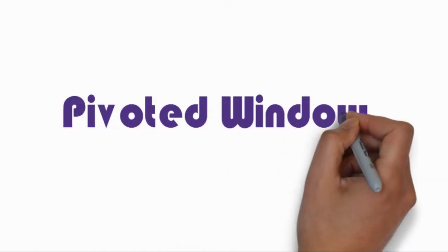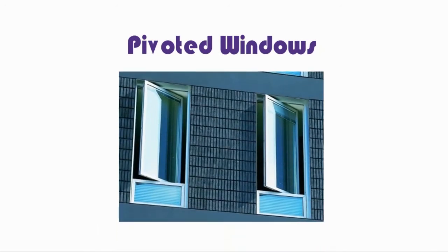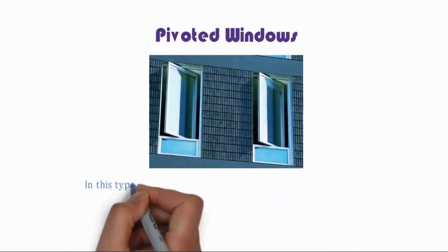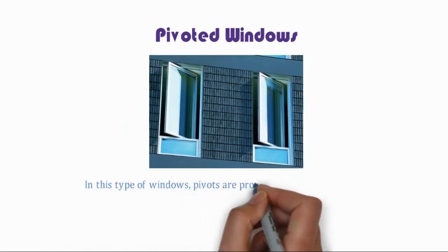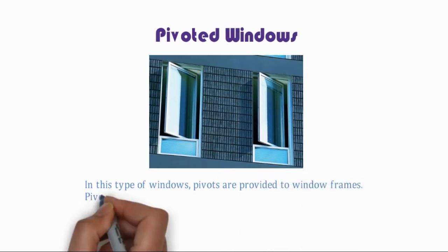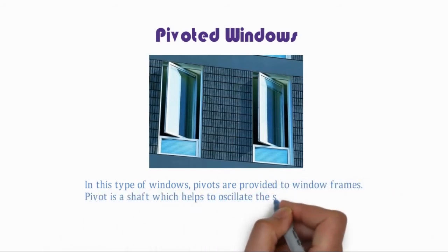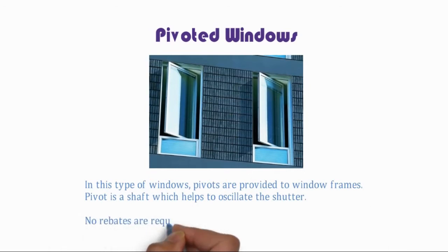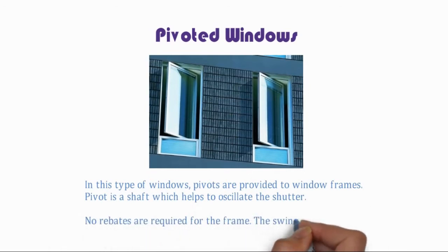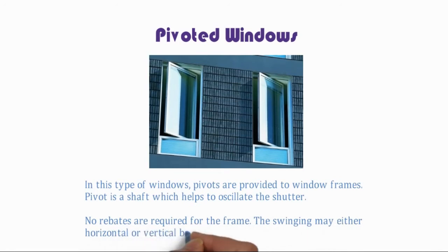Pivoted windows: in this type of window, pivots are provided to the window frame. A pivot is a shaft which helps to oscillate the shutter. No rebates are required for the frame. The swinging may be either horizontal or vertical based on the position of the pivots.